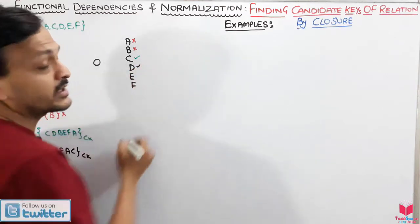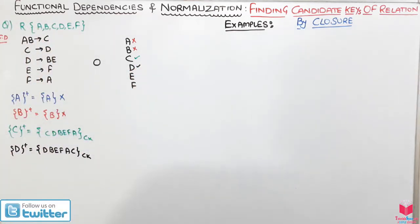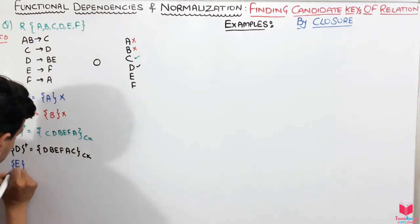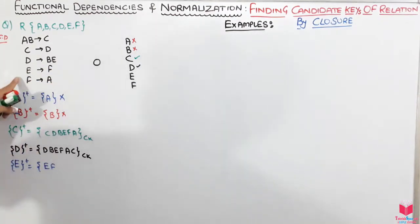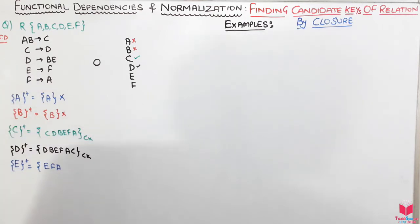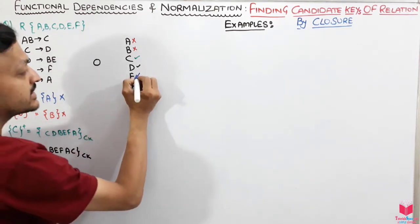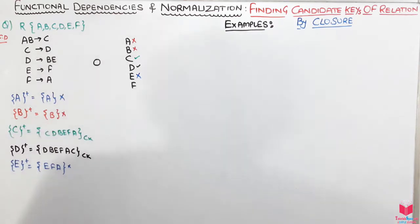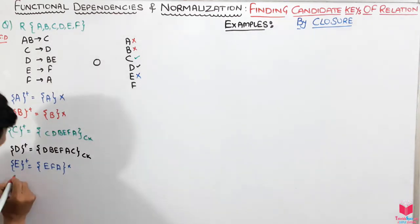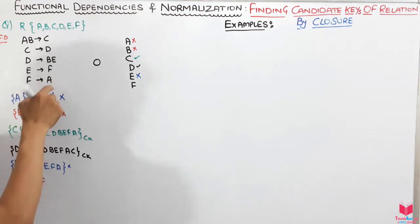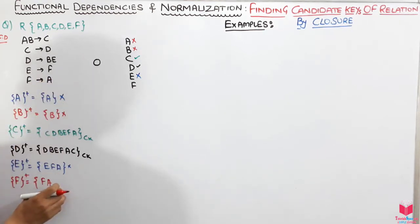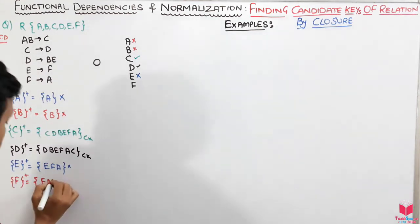D is also a candidate key. Now let's find the closure of E. E+ gives {E, F} via E→F, then F→A gives A. From the combination A and B I can get C, but B is not yet derived, so not all attributes are reachable — E is not a candidate key. Similarly, F+ gives {F, A}, and from A nothing further is reachable, so F is not a candidate key.